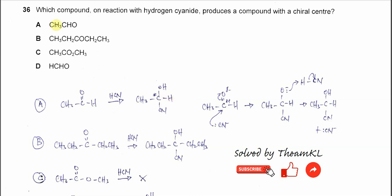Question 36: Which compound on reaction with hydrogen cyanide produces a compound with a chiral center? Let's start from option A, ethanal. When ethanal reacts with HCN, it will undergo a nucleophilic addition reaction.